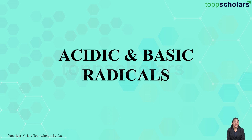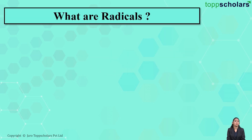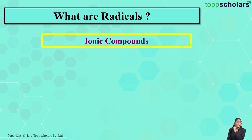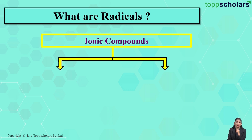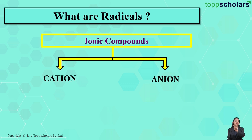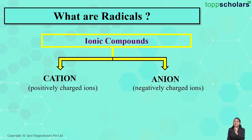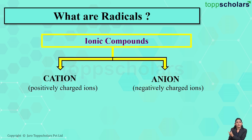Hello students, welcome to Top Scholars. Today we'll be discussing acidic and basic radicals. To understand radicals, let's first understand what we mean by ionic compounds. Ionic compounds are generally made up of two constituents: cation and anion. Cations are positively charged ions whereas anions are negatively charged ions.